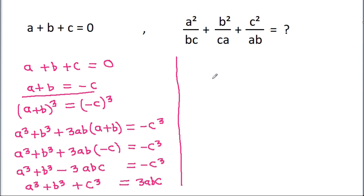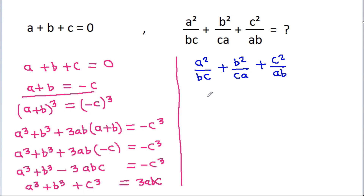Now we have to find the value of A squared by BC plus B squared by CA plus C squared by AB. Combining over the common denominator ABC, this becomes A cubed plus B cubed plus C cubed, all divided by ABC.